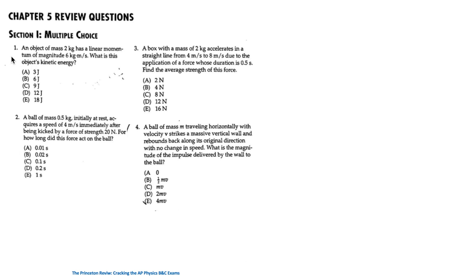For the first question, an object of mass 2 kilograms has a linear momentum of 6 kilograms times meter per second. What is this object's kinetic energy? Because linear momentum is equal to M times V, we can find the speed equal to P over M, which is equal to 3 meter per second. And the kinetic energy is half MV squared, and this gives 9 joules, so the answer is C.